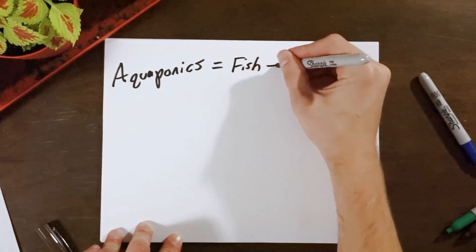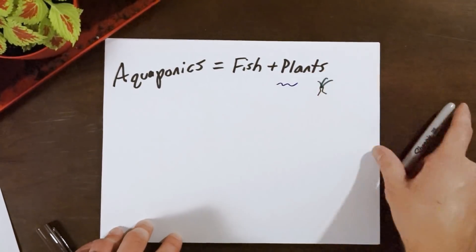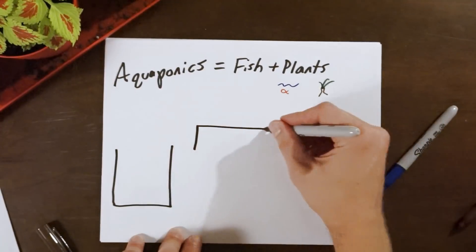The culmination of aquaculture and hydroponics is aquaponics, with the process of raising both fish and plants in one system.